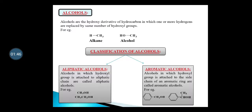These carbon chains are aliphatic. Now we will talk about aromatic alcohols. Aromatic alcohols are alcohols in which the hydroxyl group is attached to the side chain of an aromatic ring — keep in mind, to the side chain of an aromatic ring, not directly to the aromatic ring. We will see an example of a benzene ring.